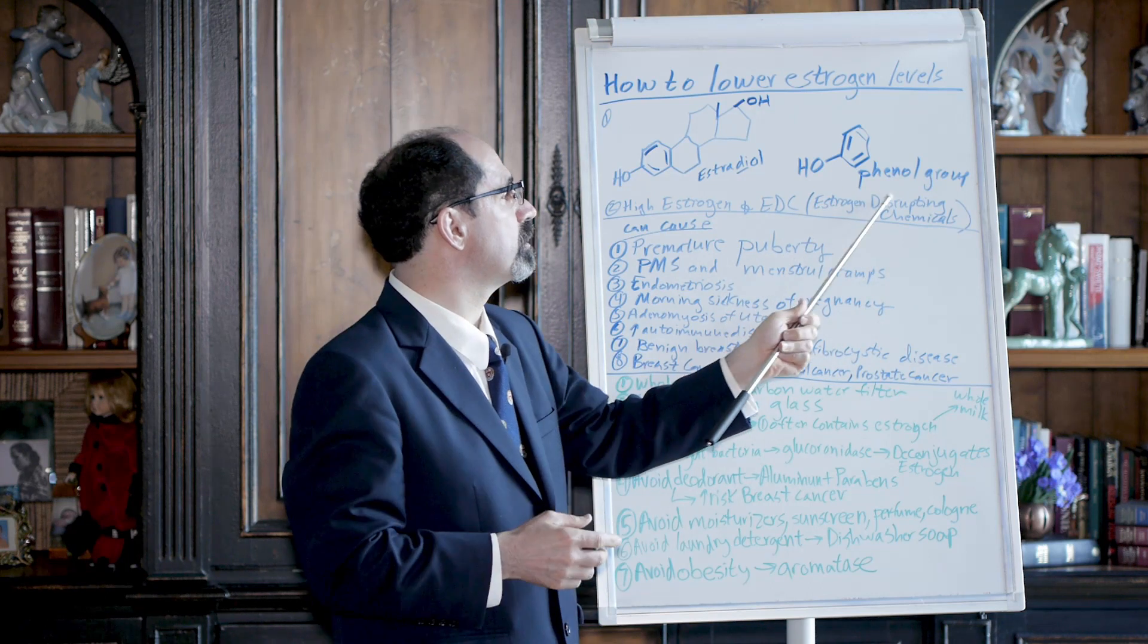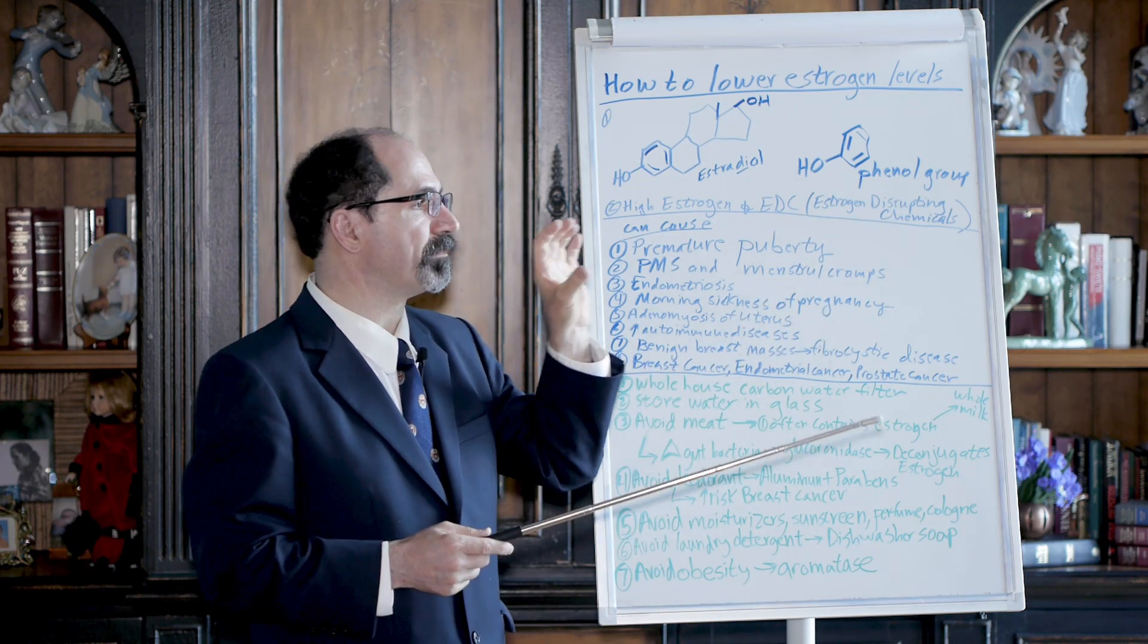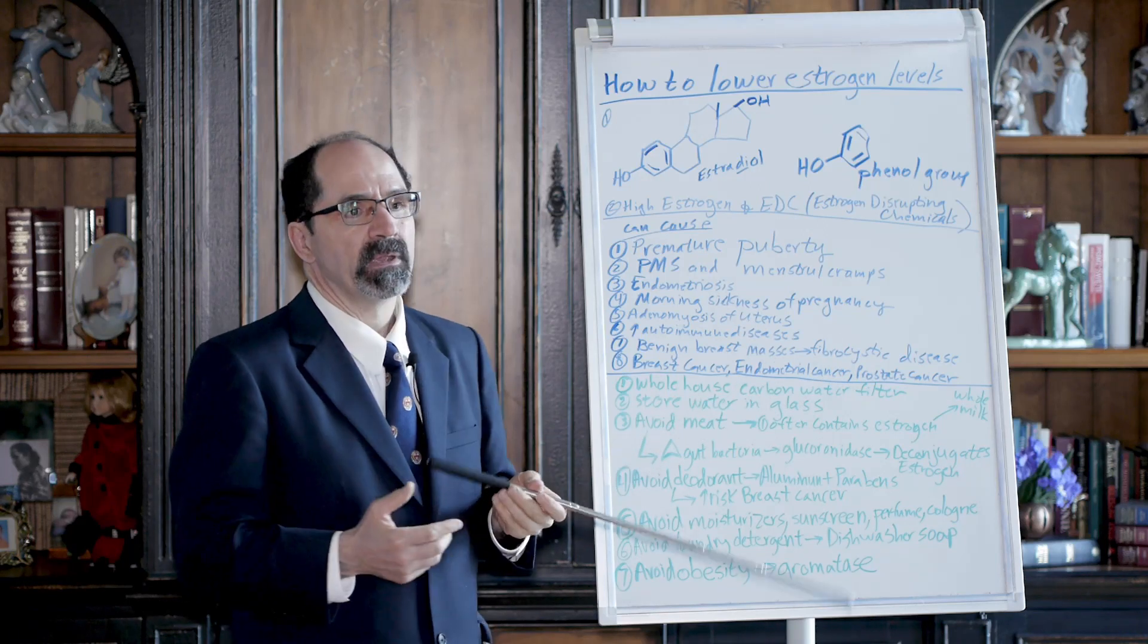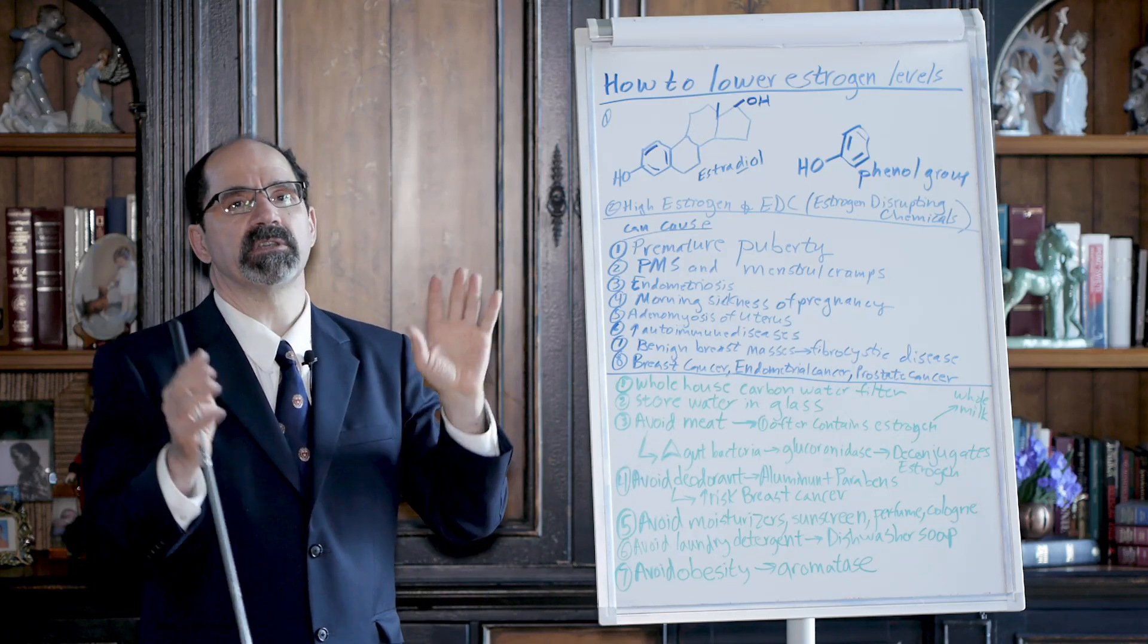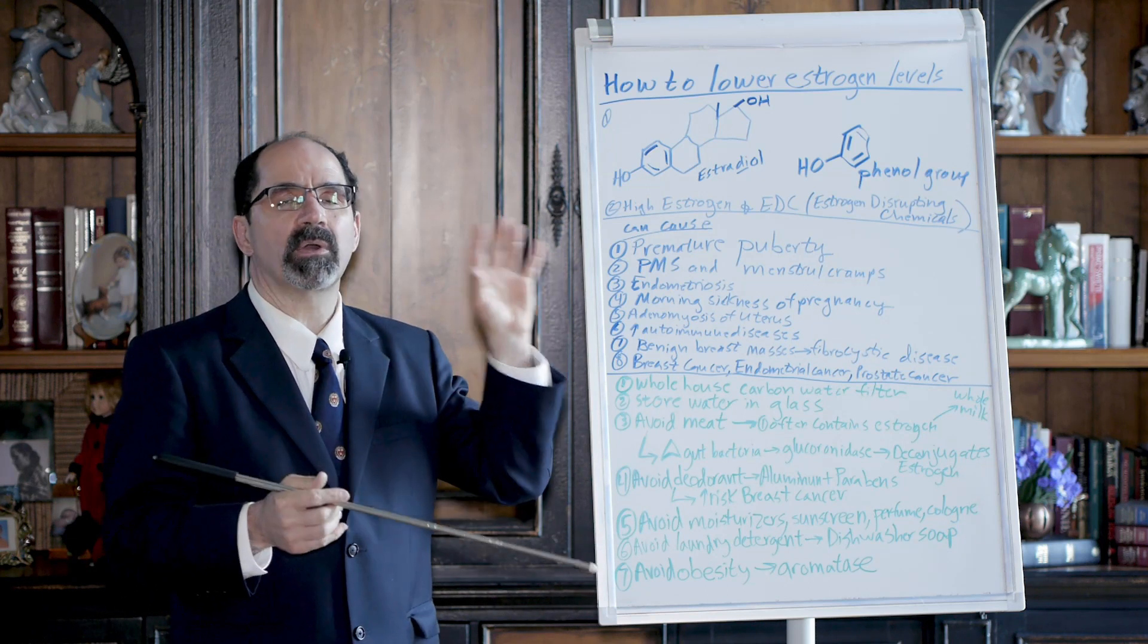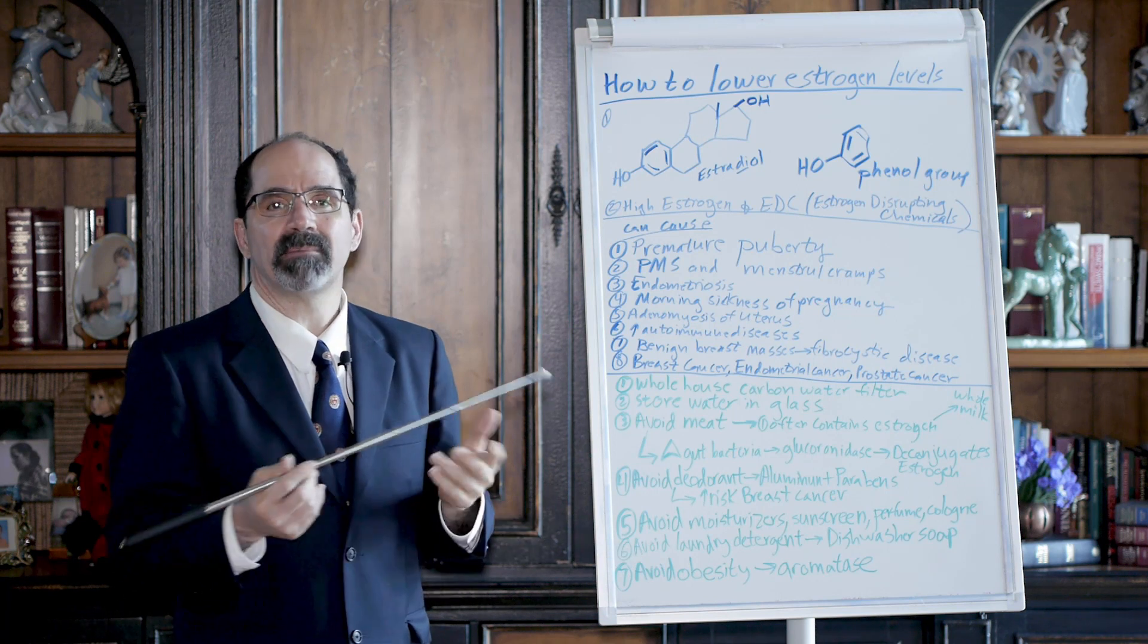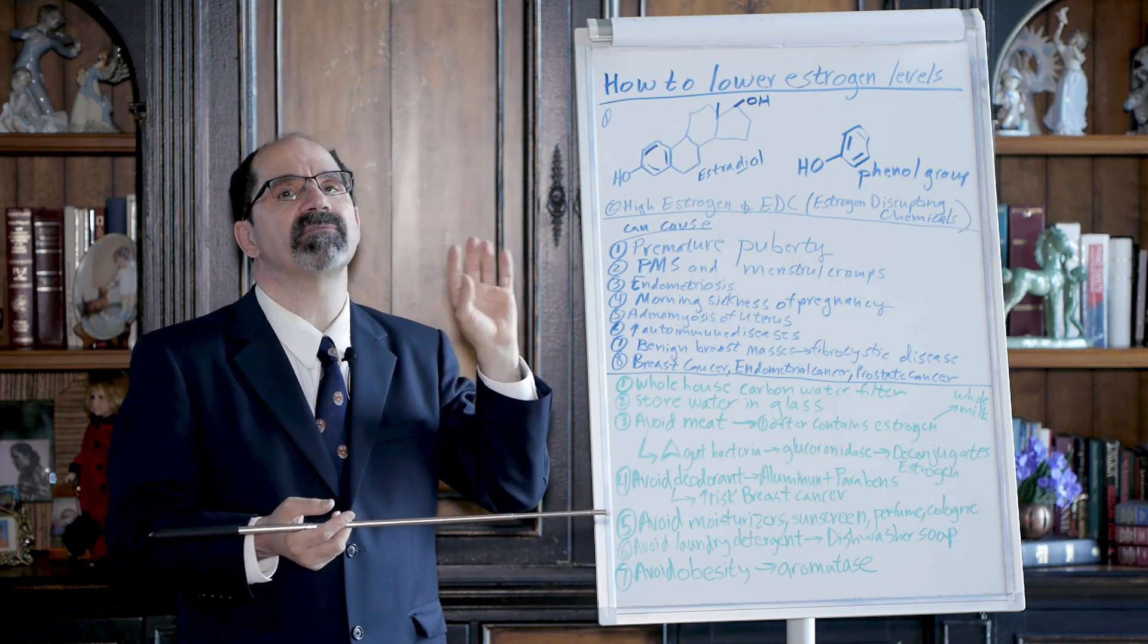Together they're called a phenol group, and this is the most important part of the estrogen molecule because that's what binds the estrogen receptor. For millions of years in evolutionary biology, the estrogen receptor had almost no competition for binding to its hormone. And what that means is the estrogen receptor is not very fussy.